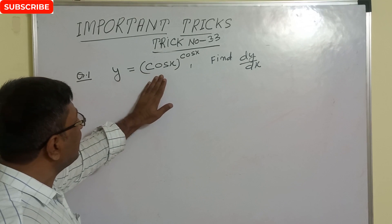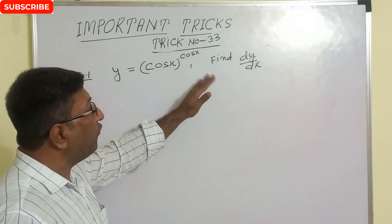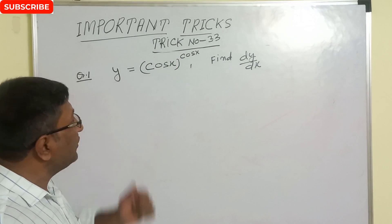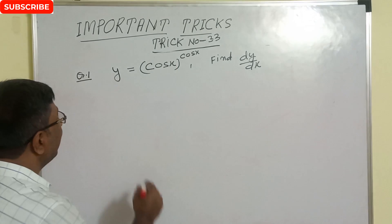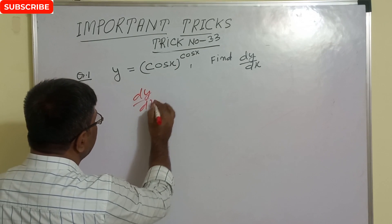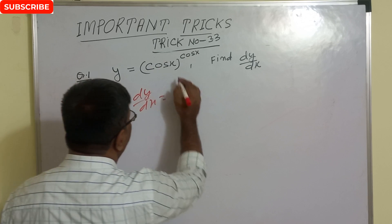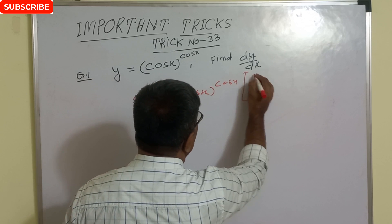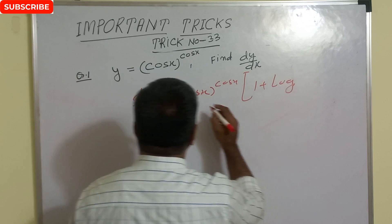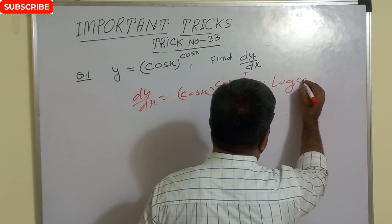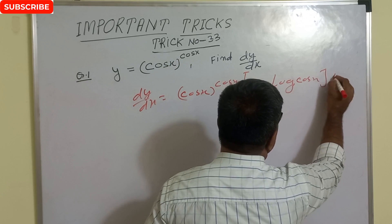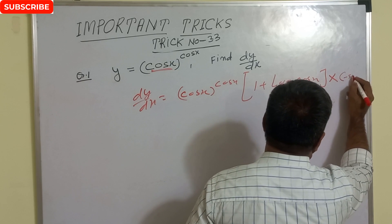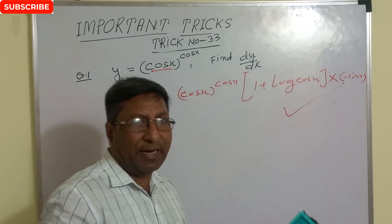y equals cos x to the power cosine x — find dy/dx. The same function is given in the power. For this type of question, there is a simple technique: dy/dx equals the function cos x to the power cosine x, multiplied by (1 plus log cos x), multiplied by the derivative of cosine x, which is minus sine x. This is the correct answer.